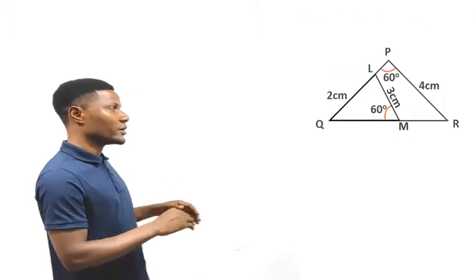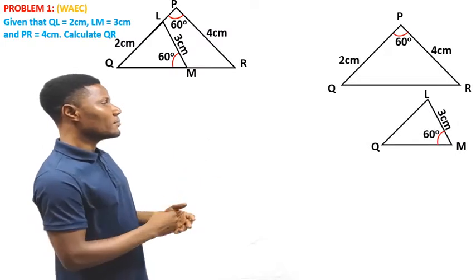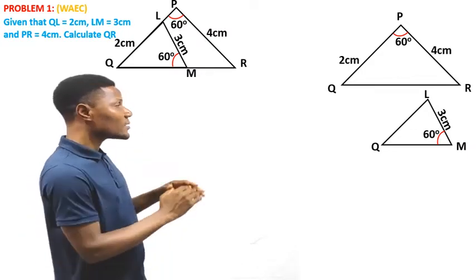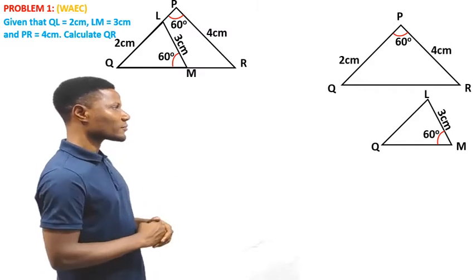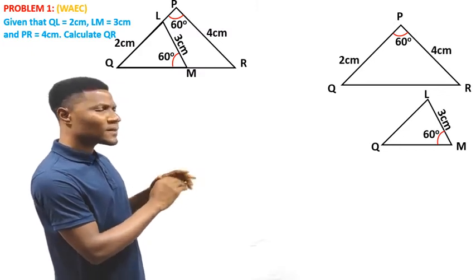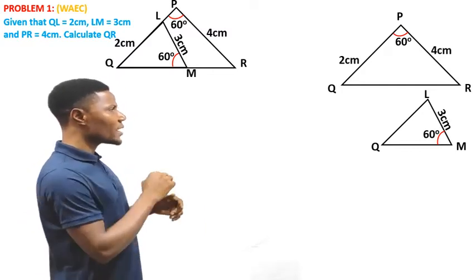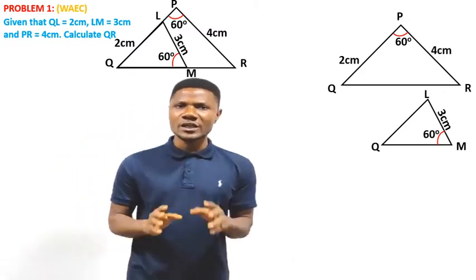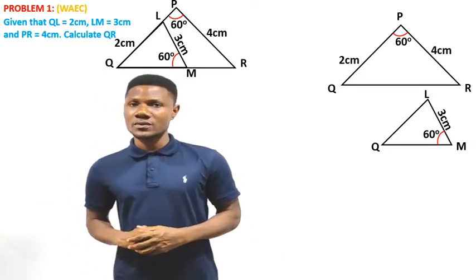Let's bring out the two triangles. We have triangle LQM and we have another triangle PQR — the bigger triangle PQR and the smaller one inscribed in the bigger one, LQM. If you look at this triangle very well, you discover that the triangles are equiangular. Both triangles have 60 degrees within them, which shows that they are equiangular. So we can use the equiangular theorem to solve the problem.